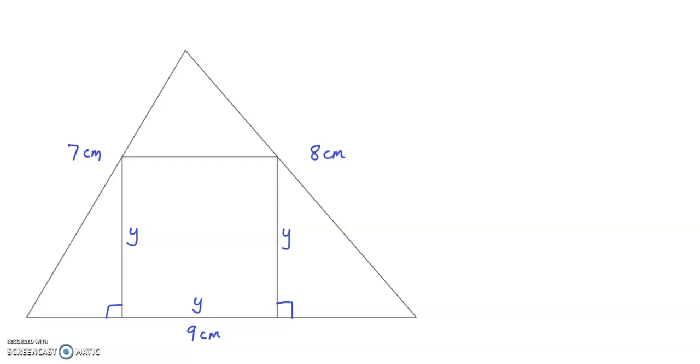I am going to denote this vertex A, this point as B, this point as C, and this point as D.